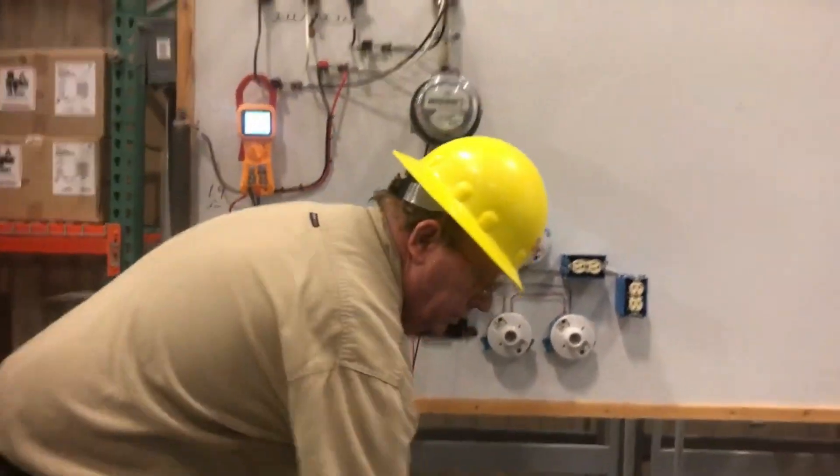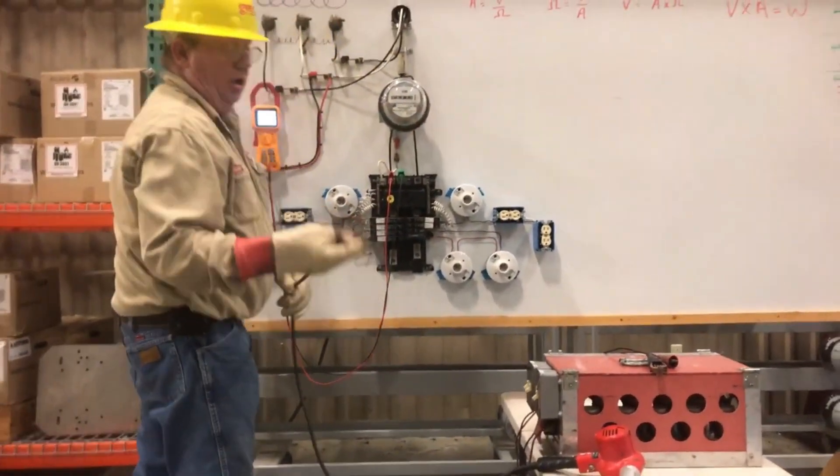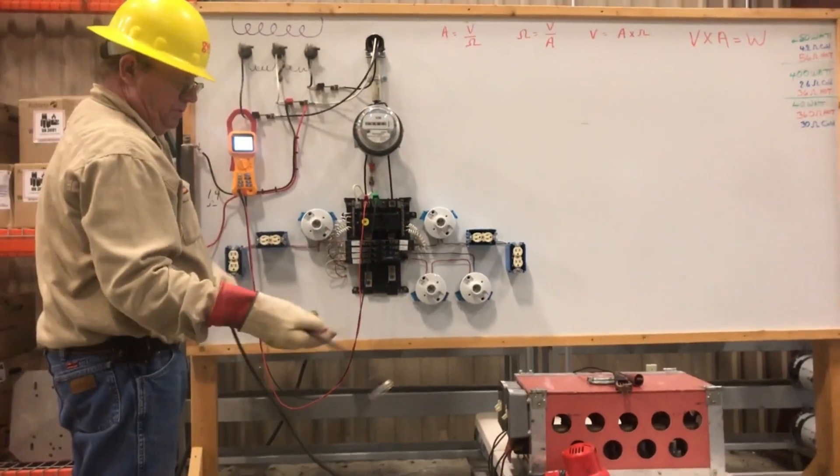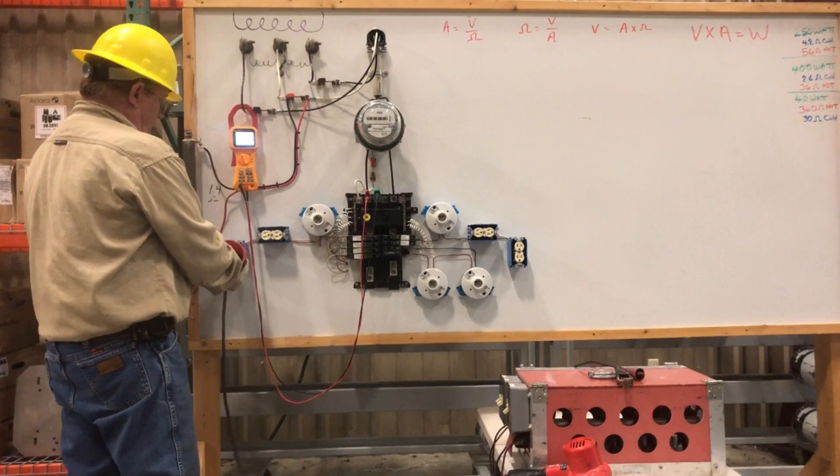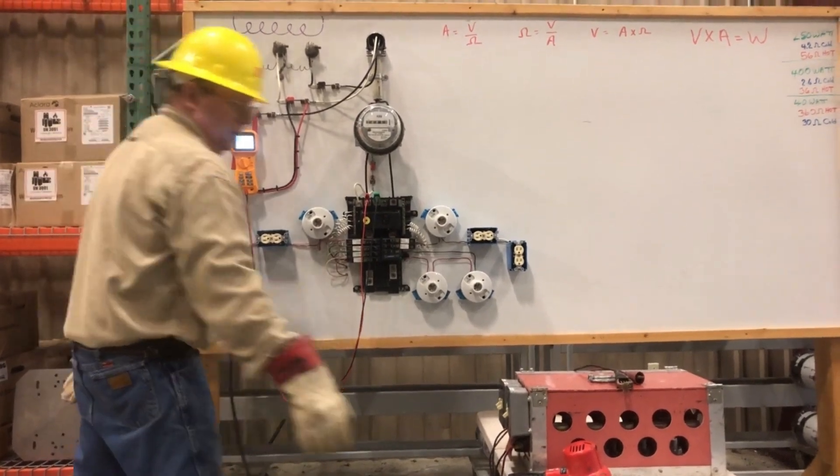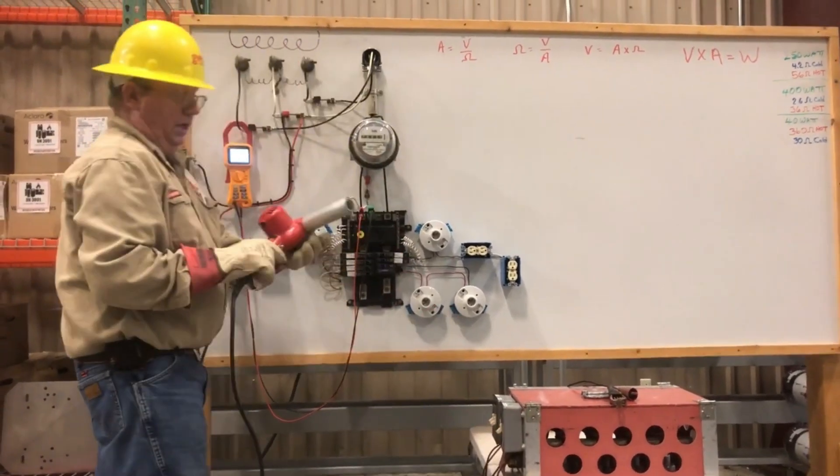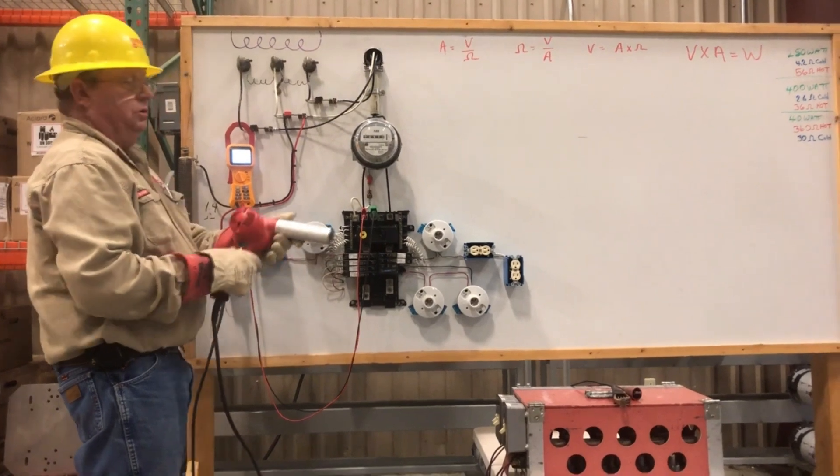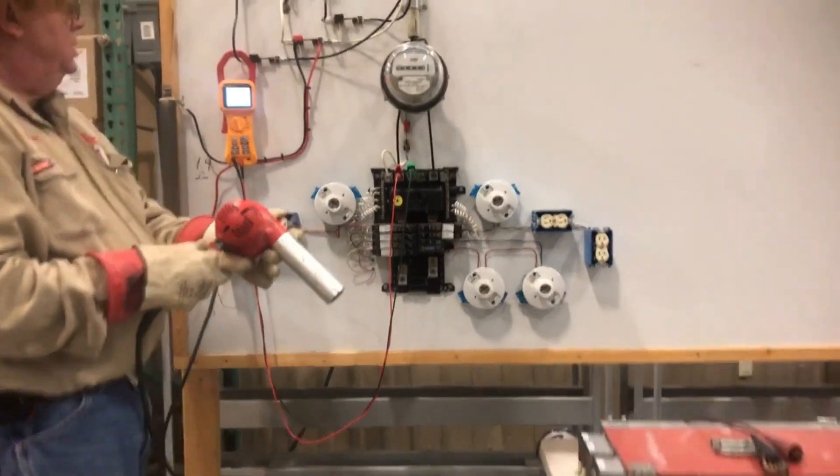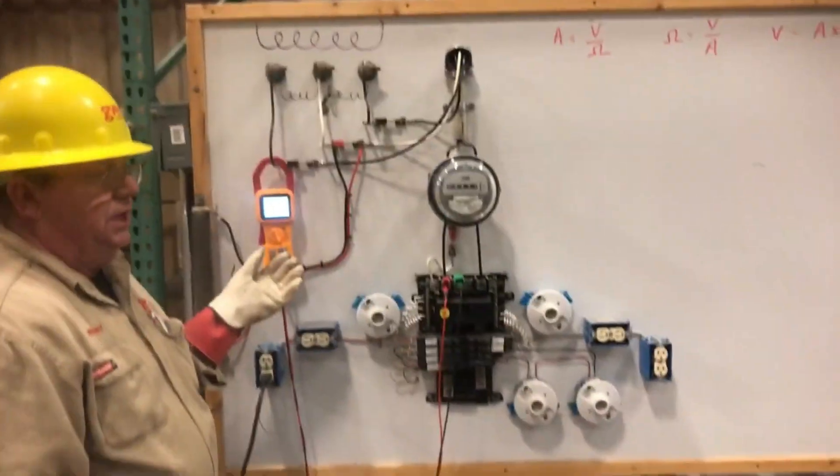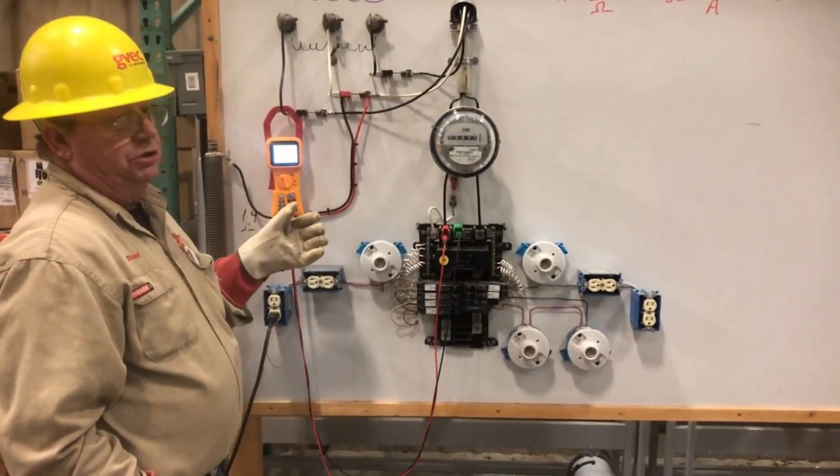Now we're going to add an external load. You're going to go and you're going to tell Ms. Smith, turn on your microwave. Ms. Smith's going to turn on her microwave, or in this case, my heat gun. And we're going to move it up to hot. 116.5 is the voltage drop.